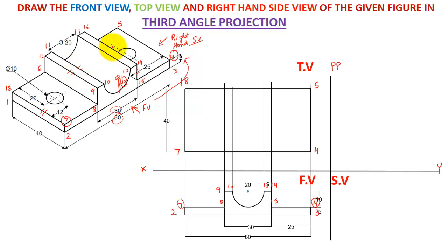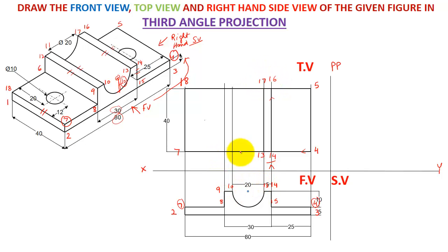From the top view, these lines are also visible to me, so I'm going to make them now. Point 14 is 25 mm away from 4 — I already took a projection of 25 mm from the front view. From 14, I make a line to point 16. From 13, I make a line to point 17. In the same way from point 10, I make a 10-to-11 line, and from point 9, I make a 9-to-12 line.